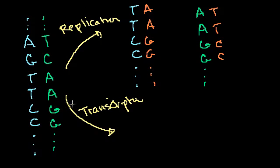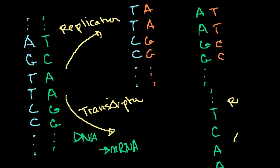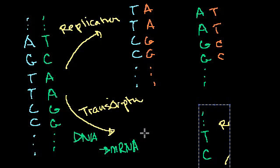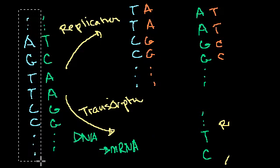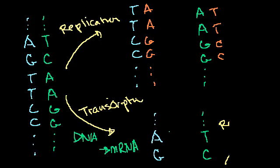Transcription is what needs to occur for DNA to eventually turn into proteins. Transcription is the intermediate step — it's where you go from DNA to mRNA. That mRNA then leaves the nucleus of the cell and goes out to the ribosomes. During transcription, the DNA strands also split apart.